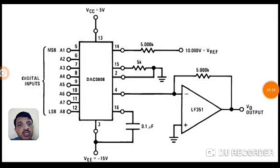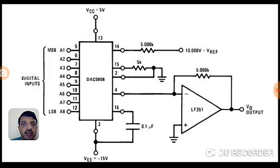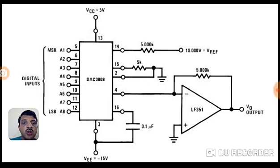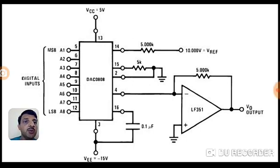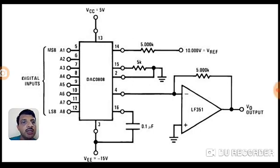Here is a typical application circuit for the DAC. It has 8 inputs — A1 to A8 — which are digital inputs to be connected to the I/O ports of the microcontroller. Pin number 4 gives you the output current I0, which is converted to voltage. That current is fed into an inverting amplifier, and V0 equals I0 times 5kΩ. So basically this DAC gives you a current value which is converted to voltage using an op-amp.